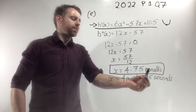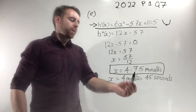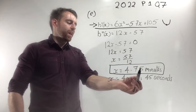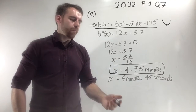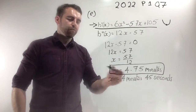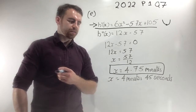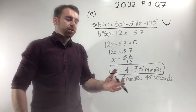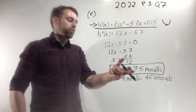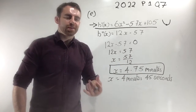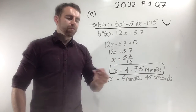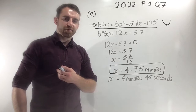It asks us to leave the answer in minutes and seconds. 0.75 minutes is three-quarters of a minute, which is 45 seconds. Or you can multiply 0.75 by 60 to get 45 seconds. So the answer is 4 minutes and 45 seconds.